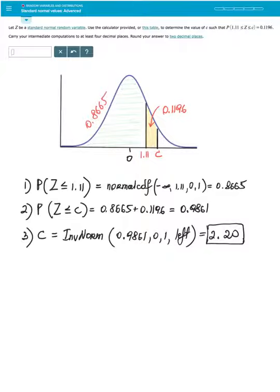Now I continue. What do I know now? Now I can add this area of 0.8665 with the area in this region that is labeled in yellow of 0.1196. So I'm combining that and I know the total is 0.9861. So just adding these two numbers. This would be the area to the left of this unknown C value.